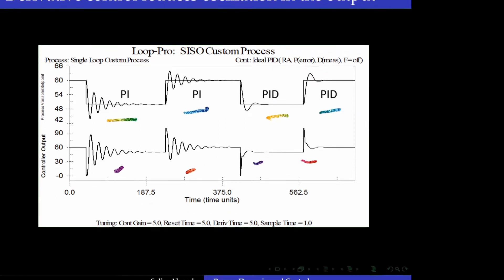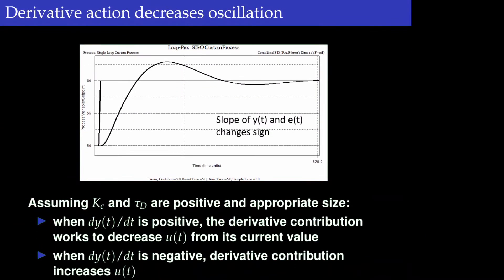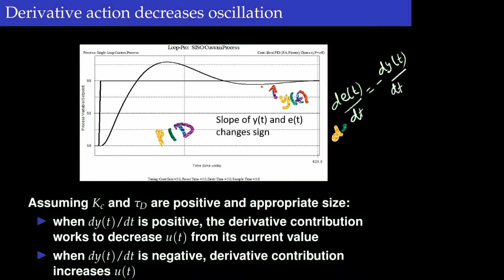How does the derivative control reduce oscillation? Looking at the response curve under PID control, the slope changes over time. This is a plot of the set point and the output. The derivative of the error is nothing but the negative of the derivative of the output signal, so the derivative of the error changes sign as the response evolves.